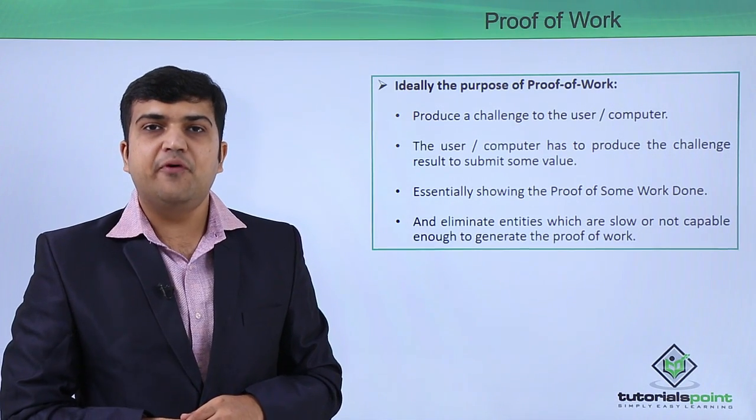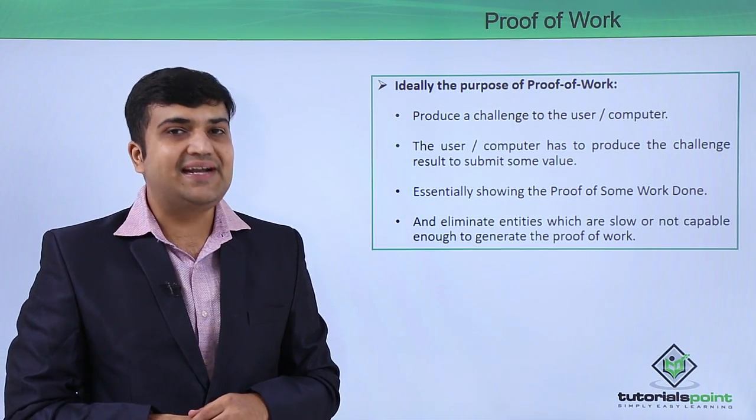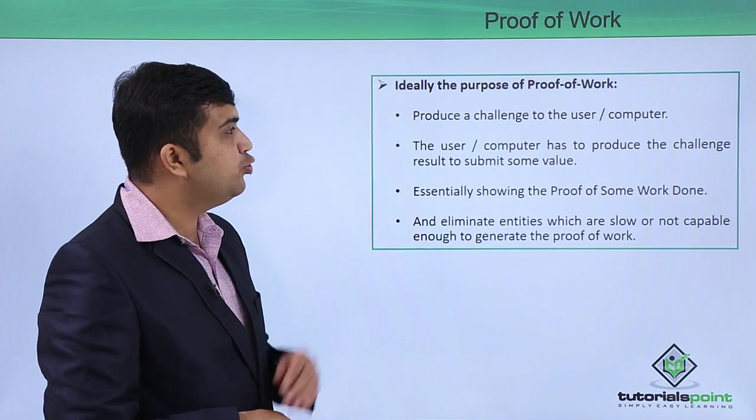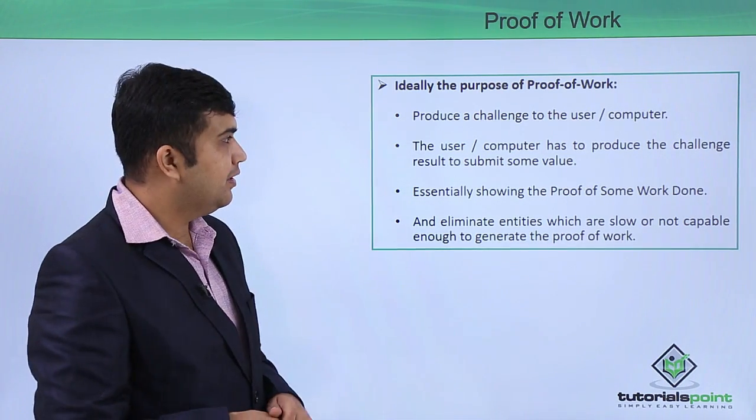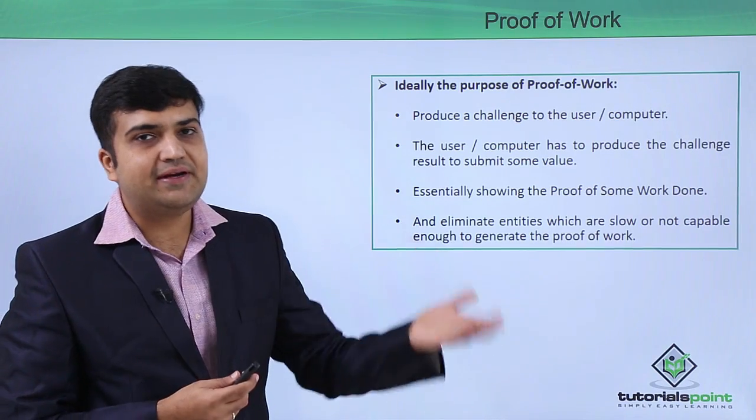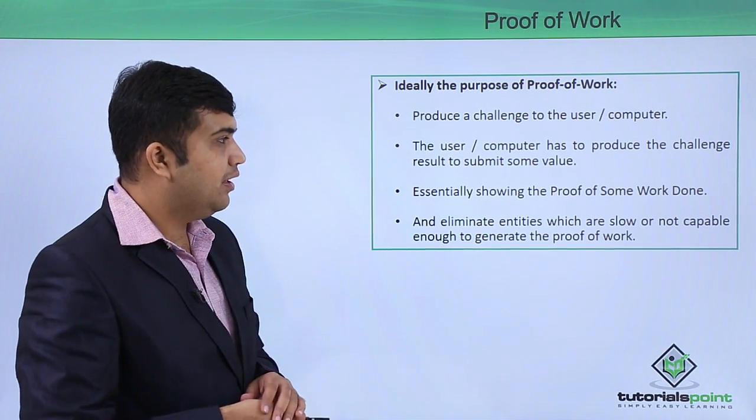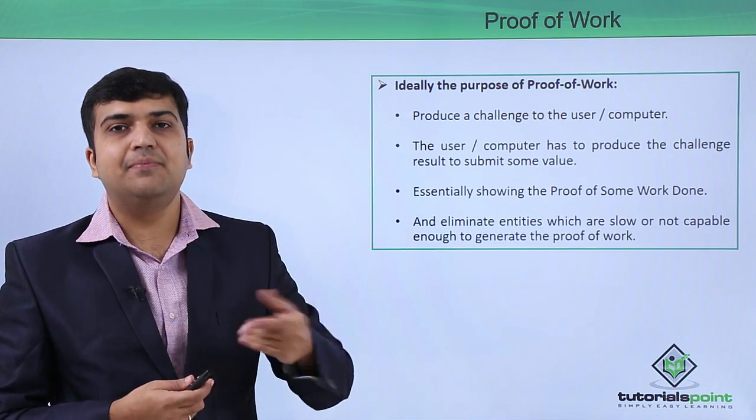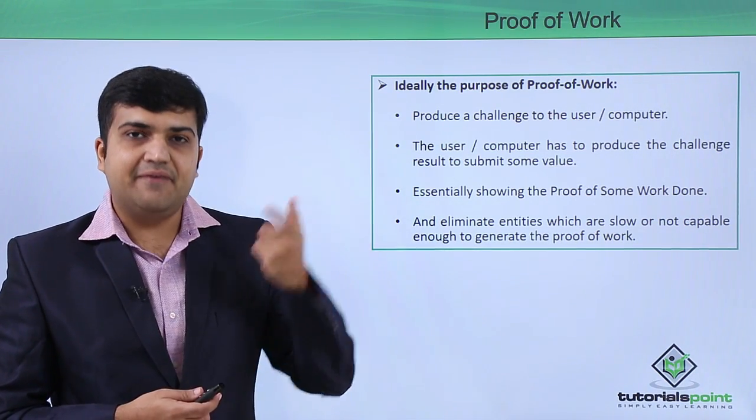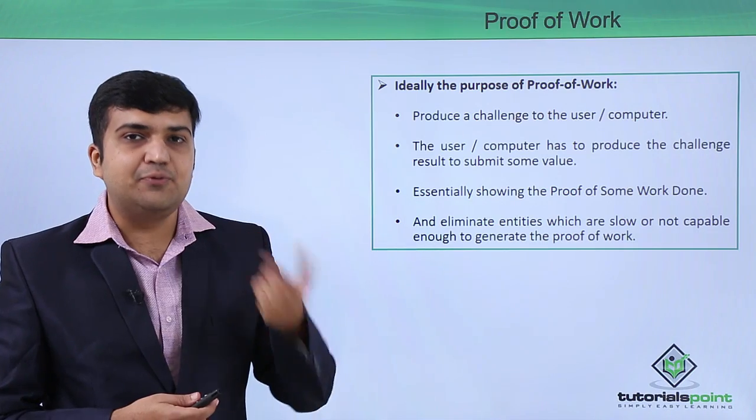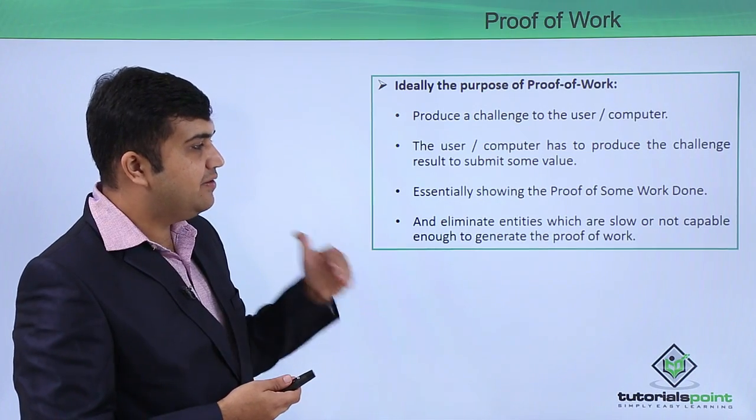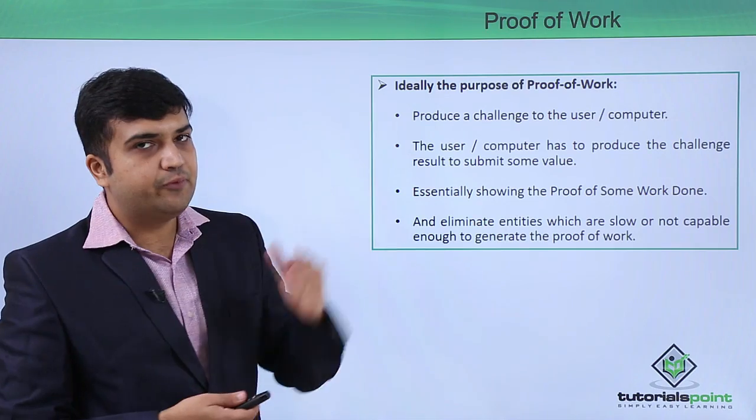The concept of proof of work is also used beyond the context of blockchain. Ideally the purpose of proof of work is to produce a challenge to the user or computer. The user or computer has to produce the challenge result and submit some value. That result should show efficient proof of work being done against that particular challenge, and once that proof of work is validated, the user or computer will be accepted further. This eliminates entities which are slow and not capable enough to generate the proof of work.